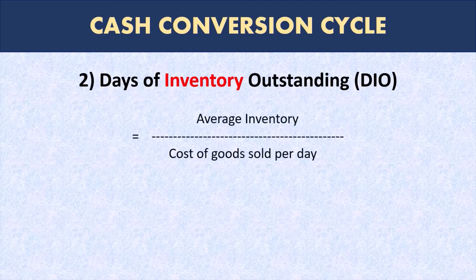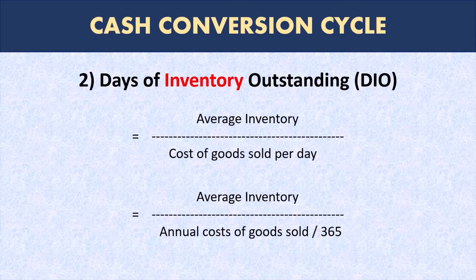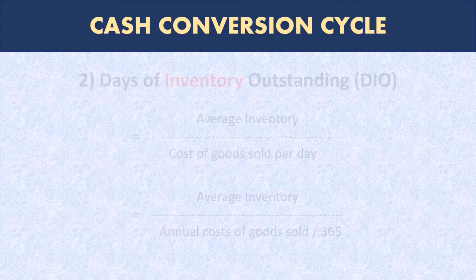Days of inventory outstanding (DIO) are calculated in a similar fashion, but the formula uses average inventory divided by cost of goods sold per day. Why cost of goods sold per day and not sales per day? Simply because the inventory value, unlike accounts receivable, is made up of cost of goods sold and does not include the profit margin that is included in the accounts receivable amounts or the selling price. So we are comparing like versus like in the numerator and the denominator.